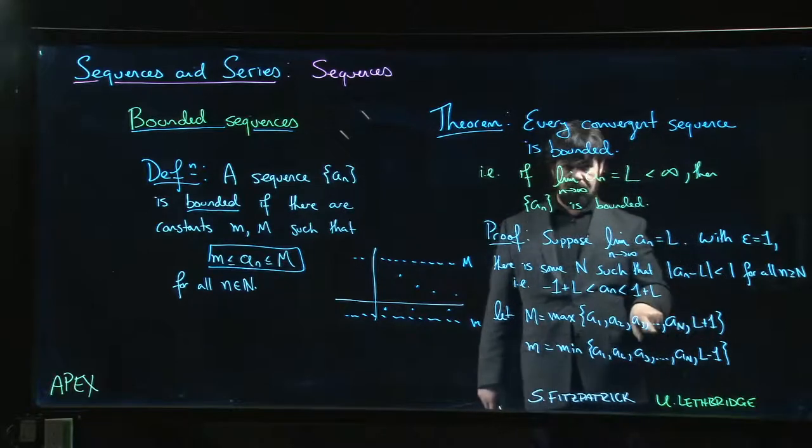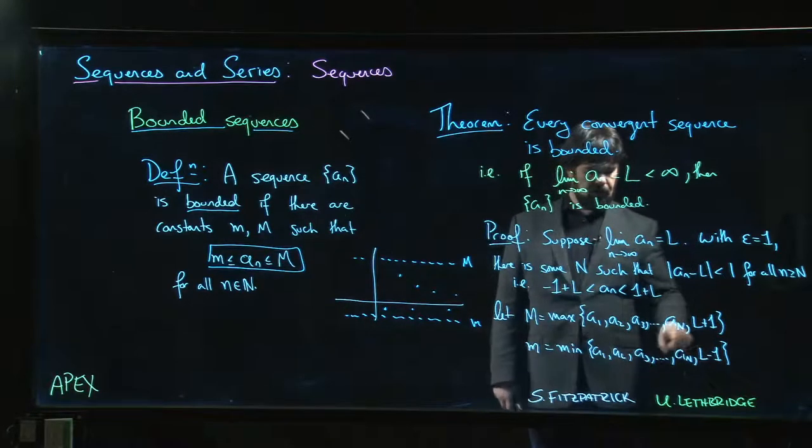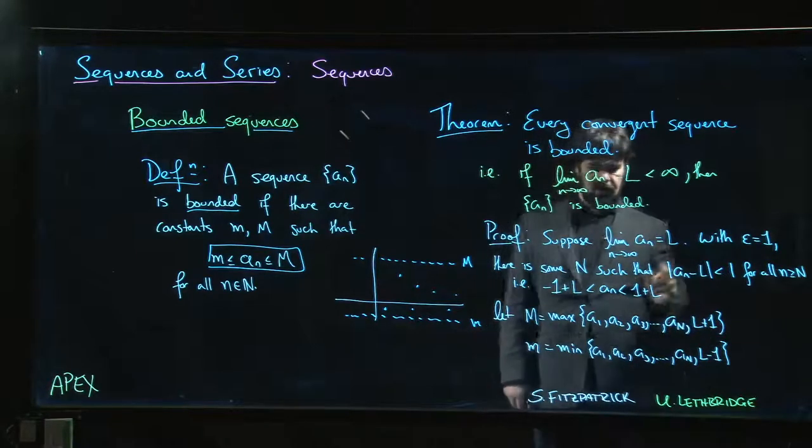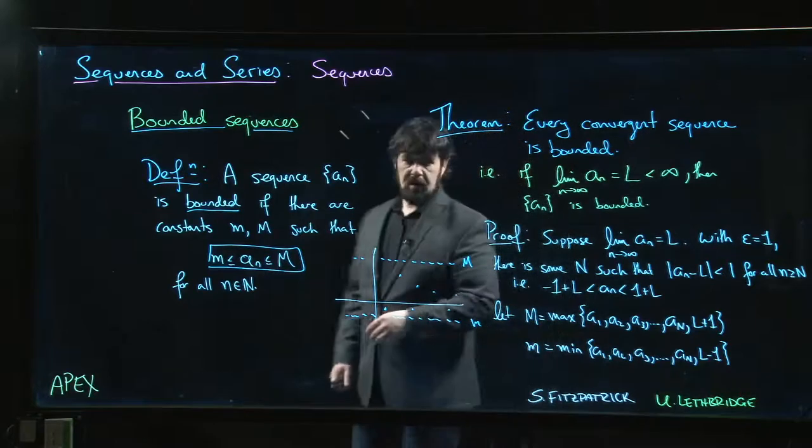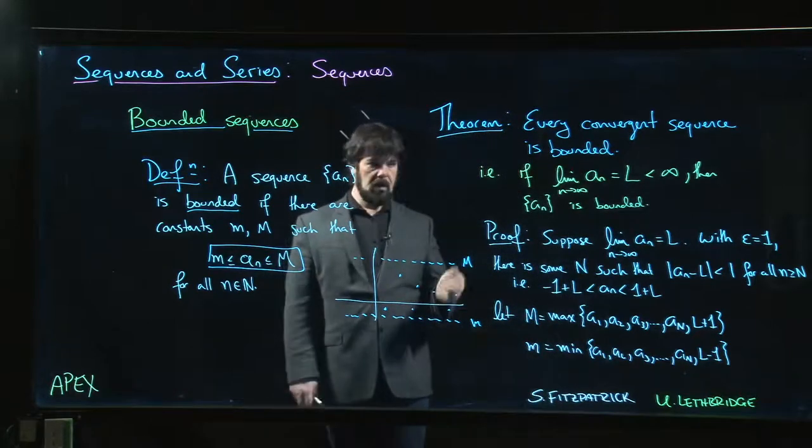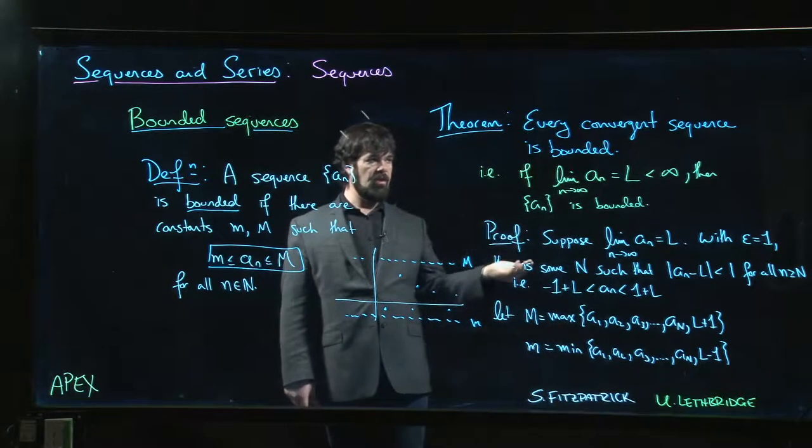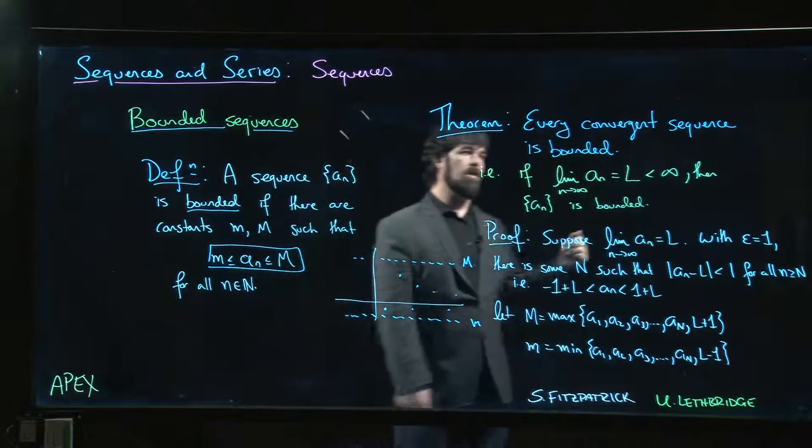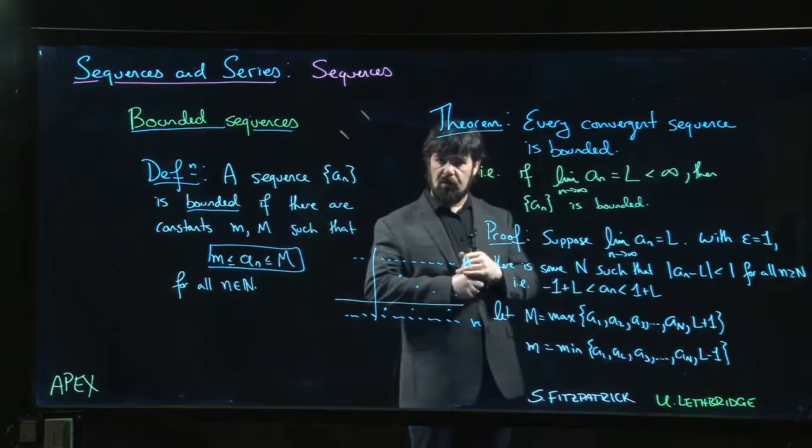Similarly, whichever one of these numbers is smallest is going to be the lower bound. So we know that a_n has to be in between for each value of n. And that proves the theorem. Every convergent sequence has a bound - we've just demonstrated it. But not every bounded sequence converges.